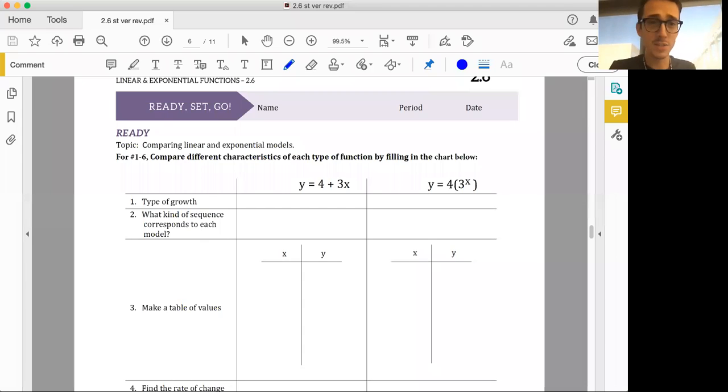All right gang, you know what it is: 2.6, ready set go! About to run through these problems because you understand everything we're doing from the first two modules. Really, module 2 is just building off of module 1, just with new titles. So what's going on here? Comparing linear and exponential models. I know a lot about these.